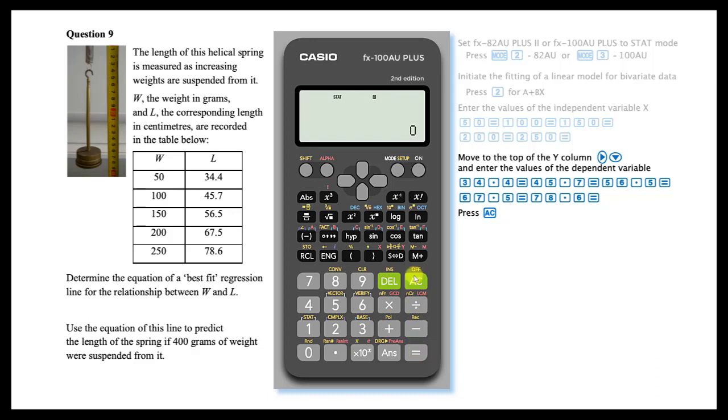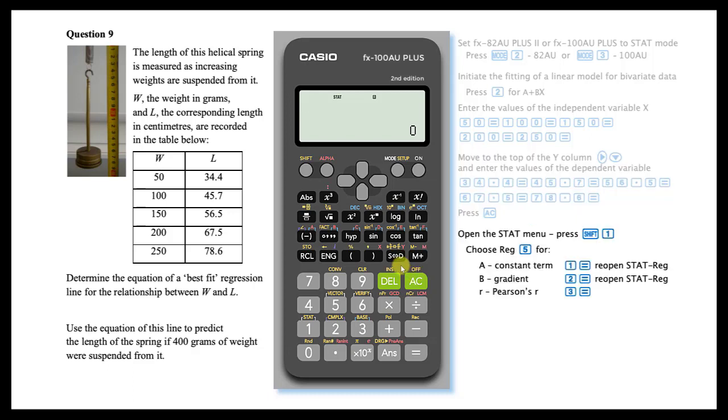To obtain the coefficients of the linear regression, open the stat menu by pressing shift then 1. Choose the regression option by pressing 5.